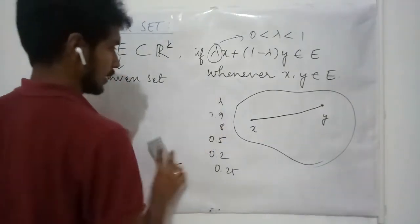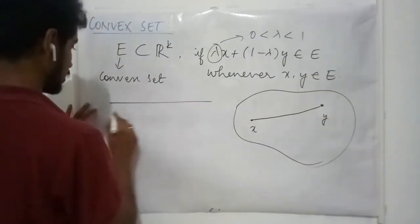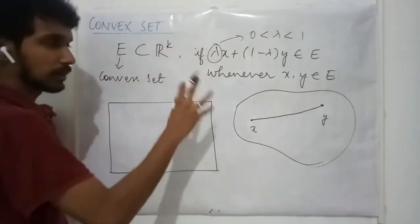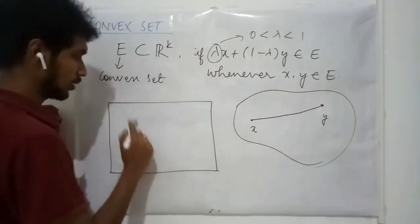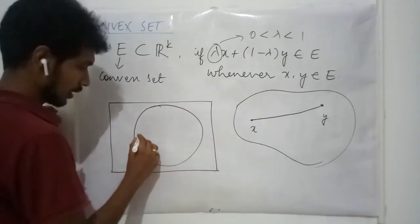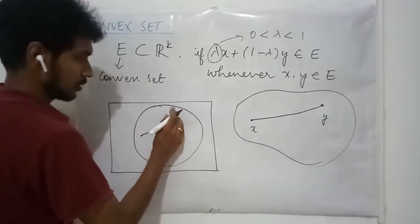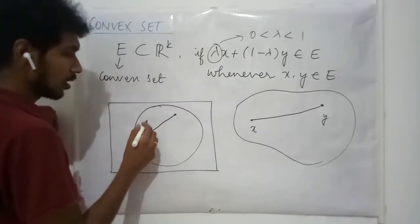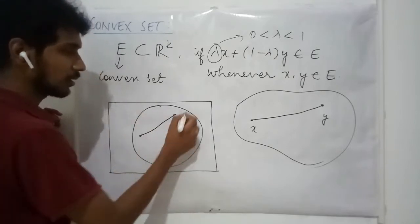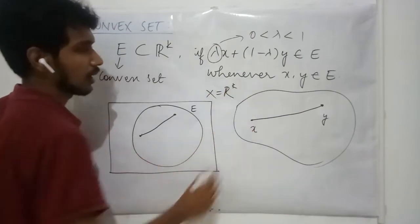Now let us see some examples of a convex set. I am not going to give any mathematical example right now; I am just going to explain the concept. Consider two points: if I join these two points by a straight line, all the points on this line lie entirely inside E. This is the metric space — here it is Rk.